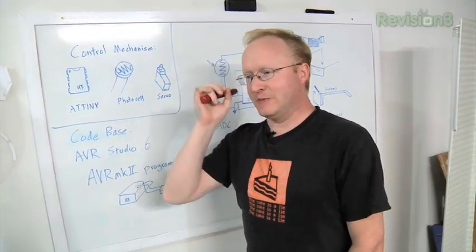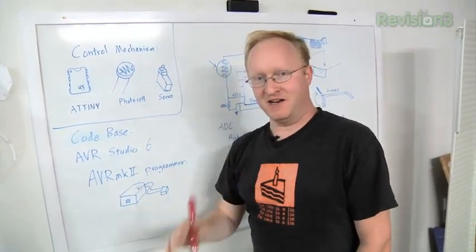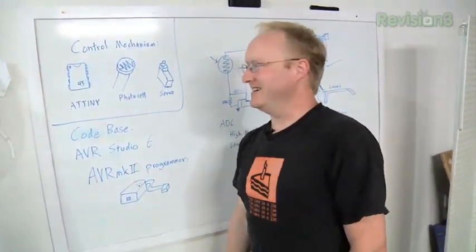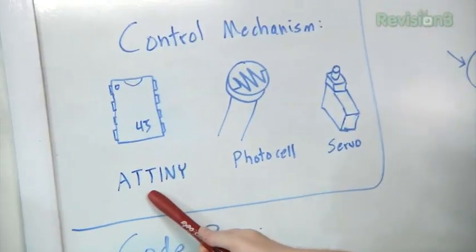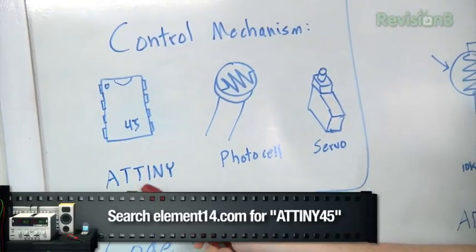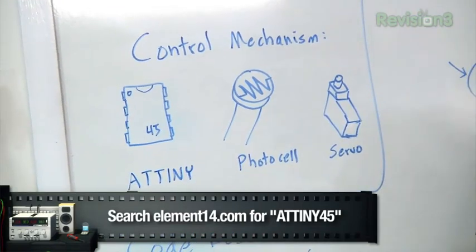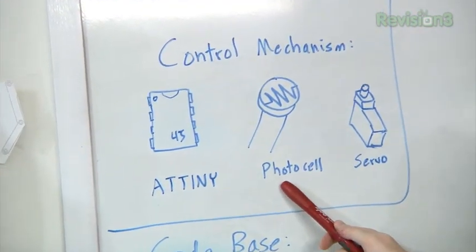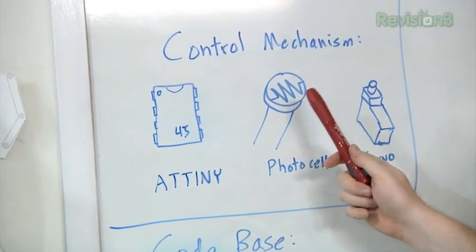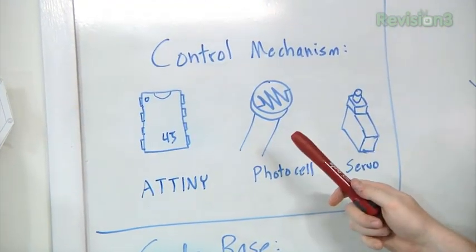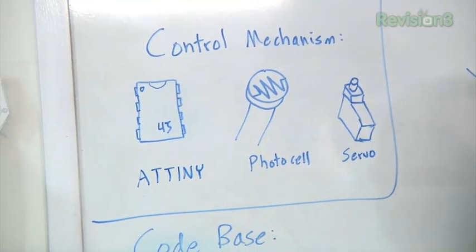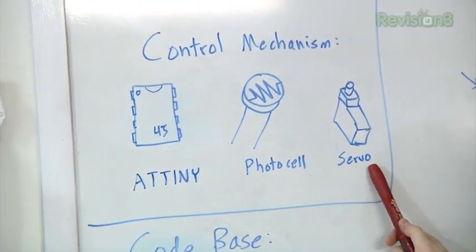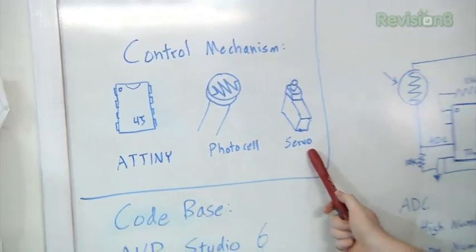Auto sunglasses - you clip them on and they flip up and down depending on sunlight. The parts we're going to need: I'm going to use an AT-Tiny microcontroller. It's cheap and easy to use and it'll make our glasses smart. Smart glass. Photo cell - it's a resistor whose resistance changes based off the amount of light coming in. The more light, the less resistance. And finally, the smallest servo we can find.